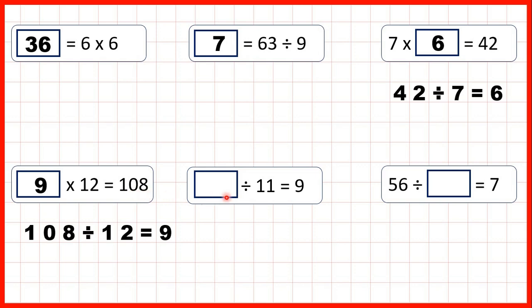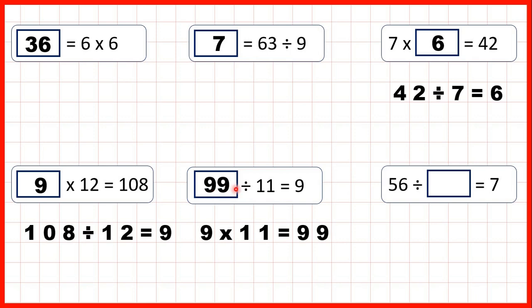Now we have something divided by 11 equals 9. Remember, division problems can be read backwards as multiplication problems. So to find our missing number we can multiply 9 by 11 — that's 99. So we know that 99 divided by 11 must be 9.